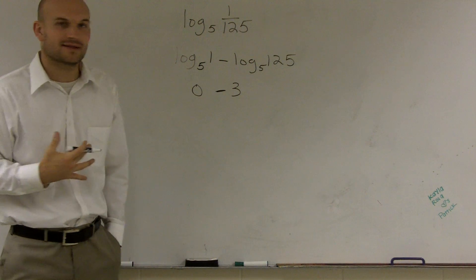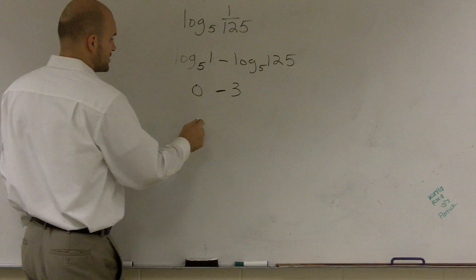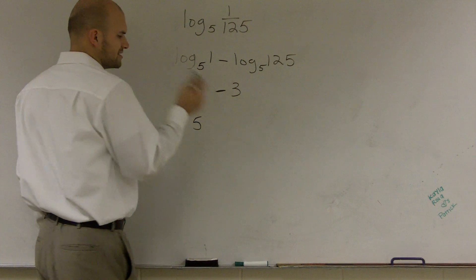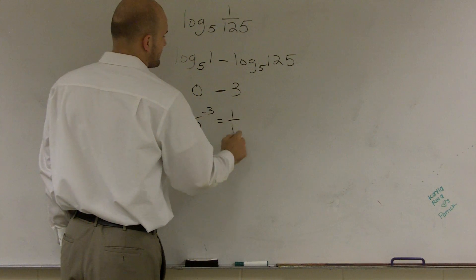And that's how you evaluate a logarithm like that, which you also could have done in your head. And if you check it in your calculator, let's just look at this: 5 to the negative 3 equals 1 over 125.